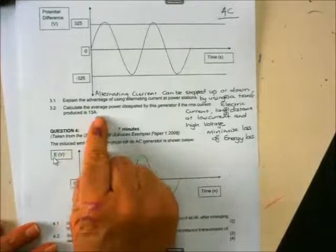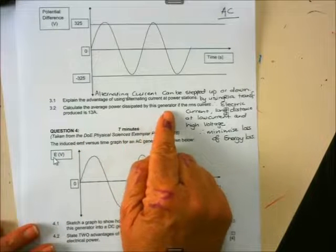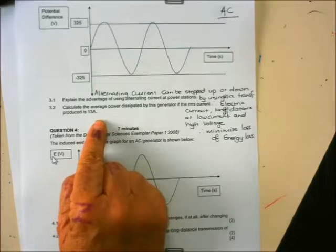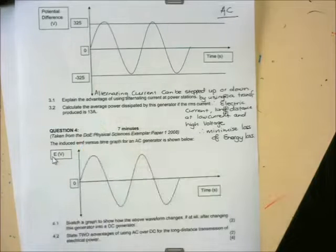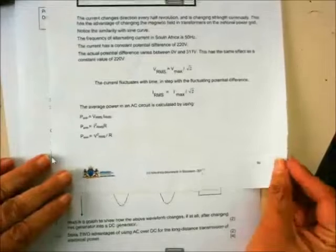Calculate the average power dissipated by this generator if the RMS produced is that. Now the first thing we need to do before we can go to the RMS is we must look at our formulas.